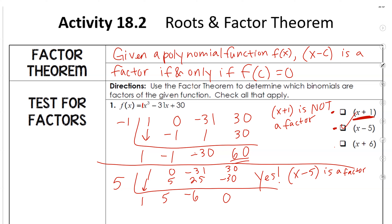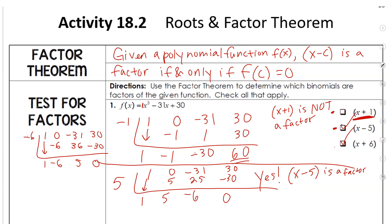Now let's test x plus 6. Using synthetic division with coefficients 1, 0, negative 31, and 30. Put negative 6 outside. Negative 6 times 1 is negative 6, then negative 6, then 36, then 5, then negative 30, and we get 0. There's no remainder, so x plus 6 is a factor. They're just testing to see which is a factor and which is not.